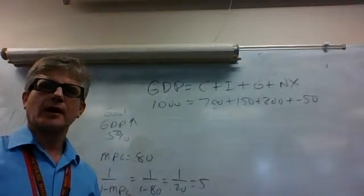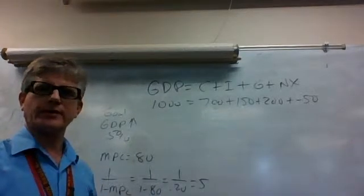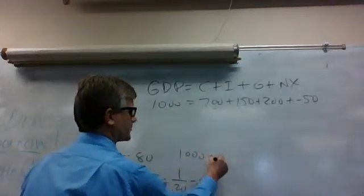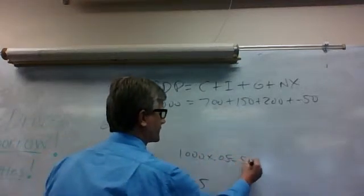The first thing that we want to do is calculate the increase in GDP. So we take the $1,000 times 0.05, so we take $1,000 times 0.05 equals 50.